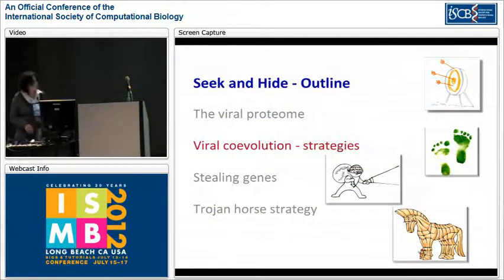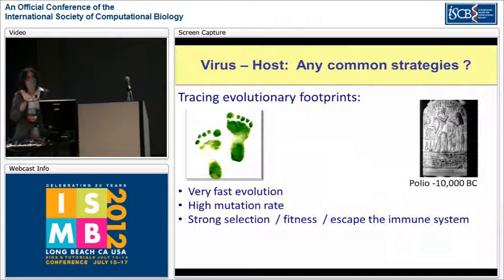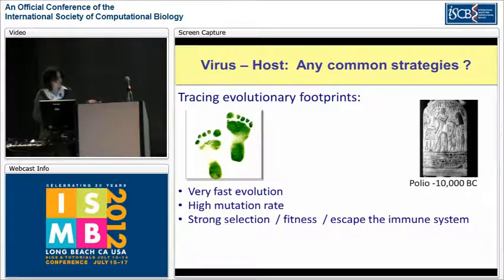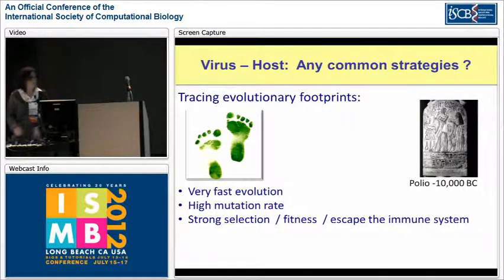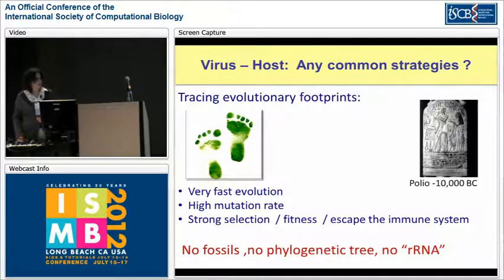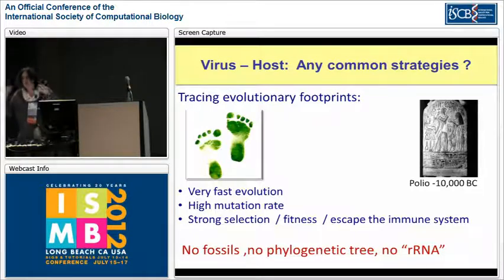Let's discuss viral co-evolution. What we really want to do is trace the evolutionary footprint of viral evolution. However, we have a really inherent problem: there is very fast evolution going on. As many of you are aware, there is a very high mutation rate - not in all viruses, but in a substantial fraction. There is strong selection, escape of the immune system, a lot of positive selection, and so on. Even worse, there are no fossils, no phylogenetic tree, and no ribosomal RNA as a reference - something we are used to building phylogenetics with.